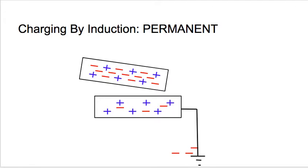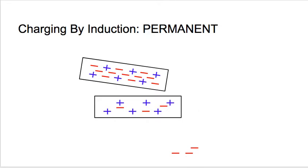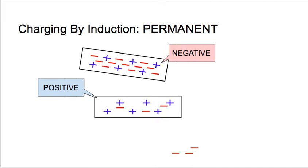At this point, if we carefully time this, we can remove the connection to the ground. All these negative charges have escaped into the ground. If we remove this connection and then remove the charged object, there is no way for those negative charges to come back up, so the object cannot stay neutral. They're trapped in the ground because the connection is now broken, and what you're left with is a positively charged object.